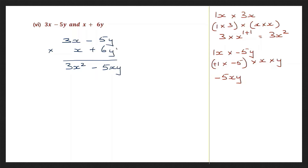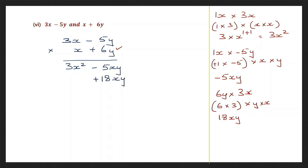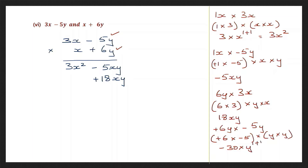Now let's multiply 6y into 3x: 6y into 3x is 6 into 3 into y into x — 6 threes are 18 — so we have 18xy, putting it in the xy column as plus 18xy. Now let's multiply 6y into minus 5y: plus 6 into minus 5 into y into y — plus into minus is minus, 6 fives are 30, into y to the power of 1 plus 1 — giving minus 30y squared. That's a separate column: minus 30y squared.